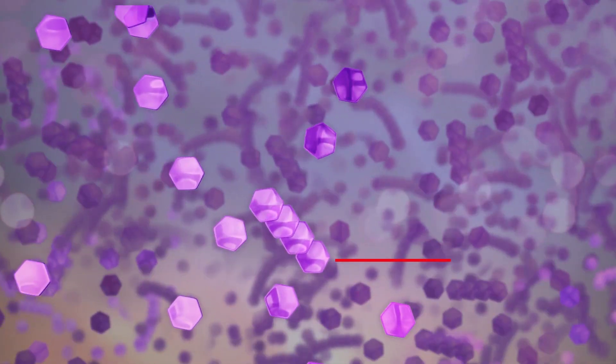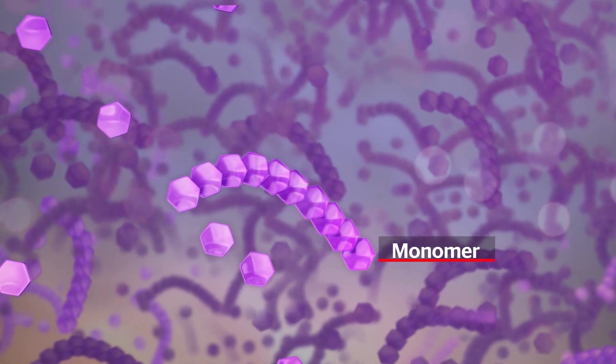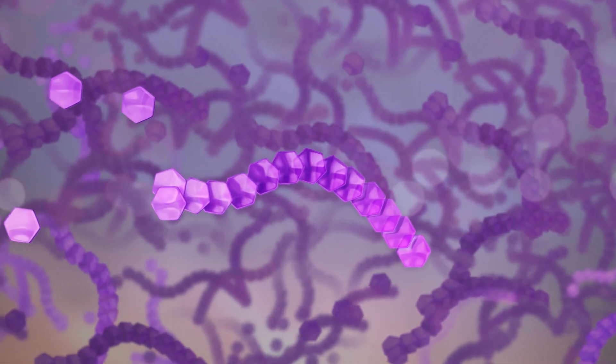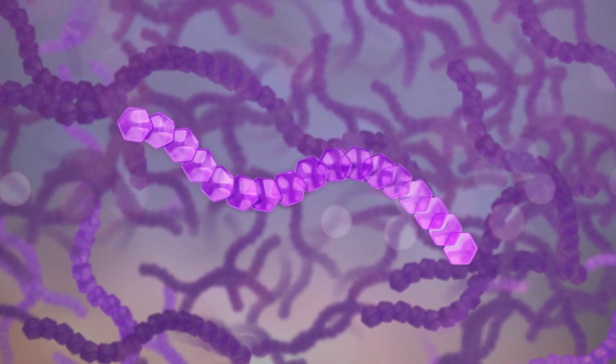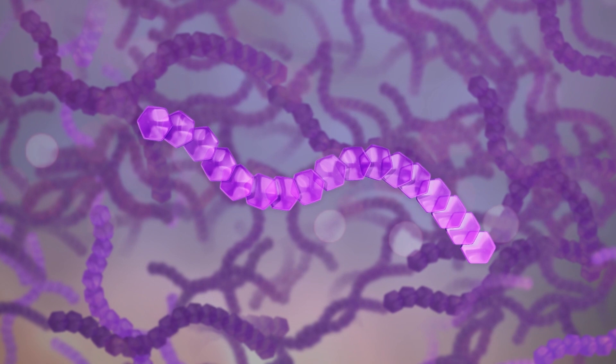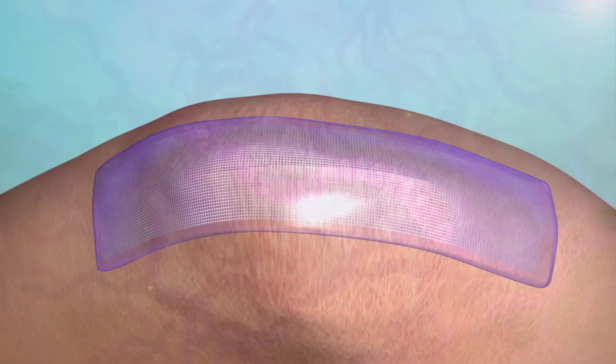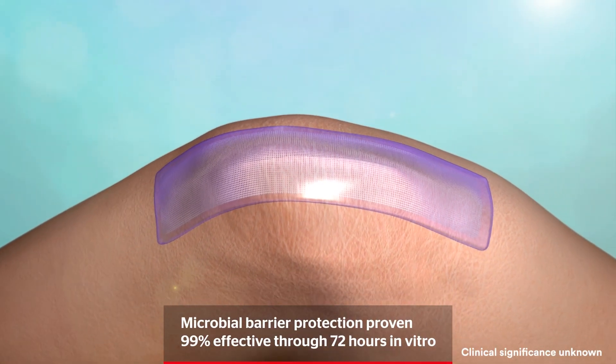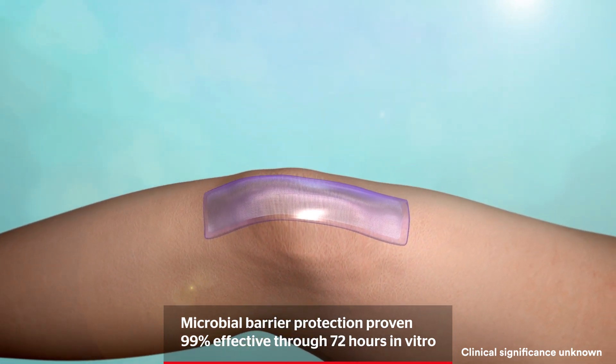Polymerization begins the instant the monomer meets the initiator. In roughly 60 seconds, all of the 2-octyl cyanoacrylate monomer has polymerized into a strong yet flexible film that provides a barrier to microbial penetration and strong, secure closure.